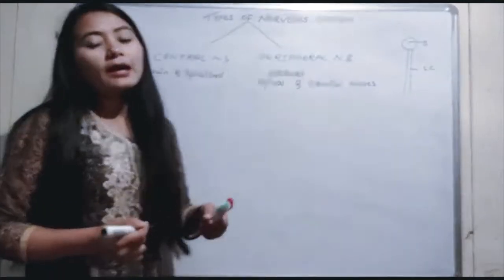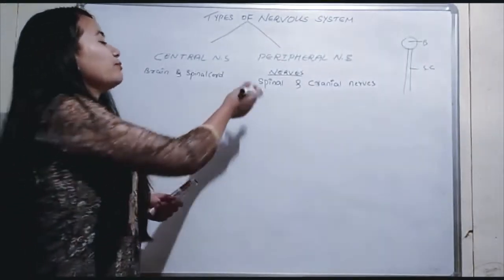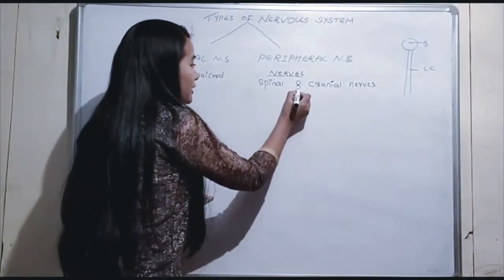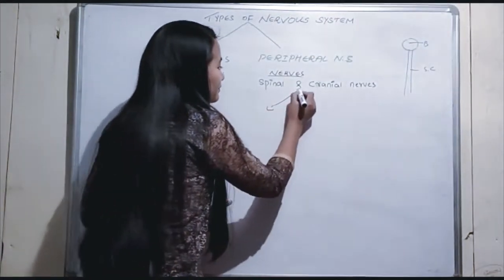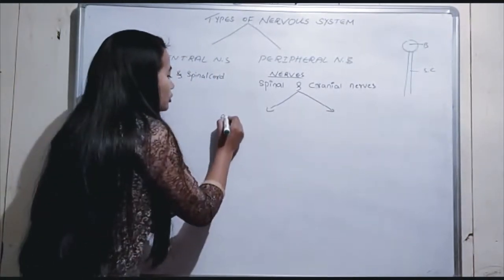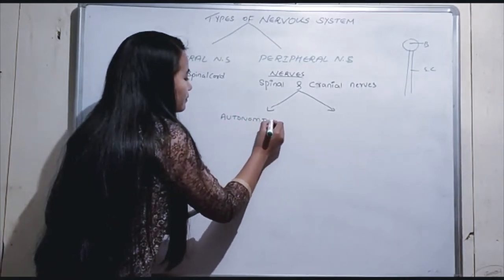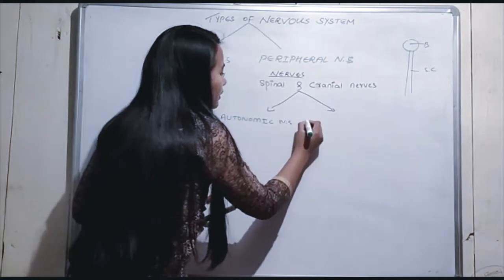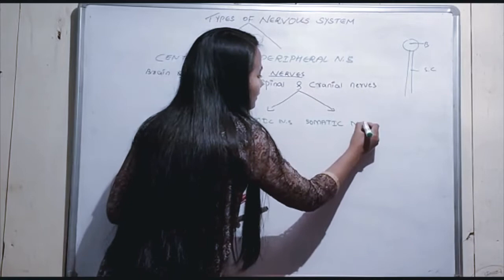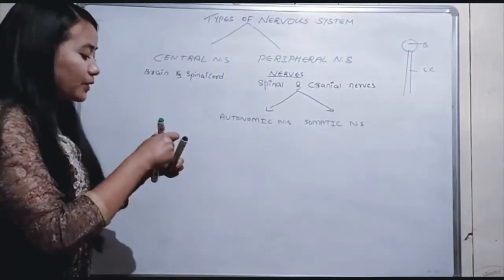The Peripheral Nervous System can further be divided into two parts: the Autonomic Nervous System and the Somatic Nervous System.